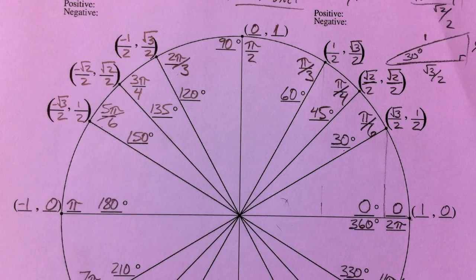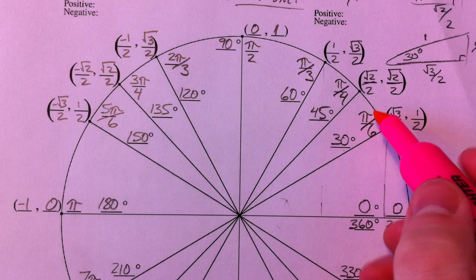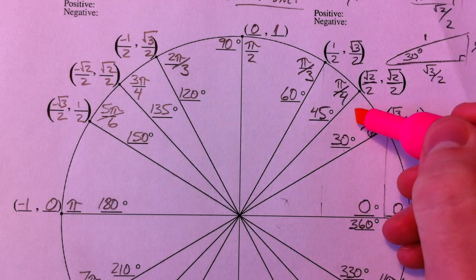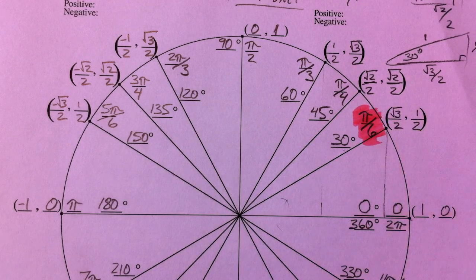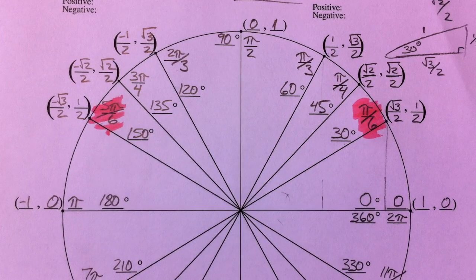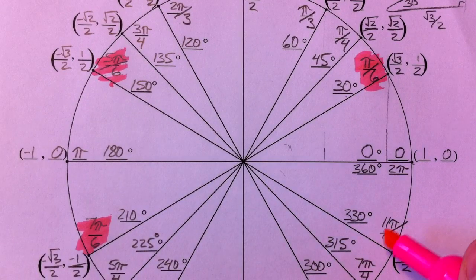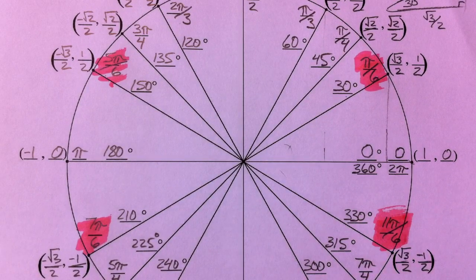What I want you to notice is where our pi over sixes are. Pi over six is the 30-degree angle, so you have pi over six right here, five pi over six right here, seven pi over six right here, and eleven pi over six right here.